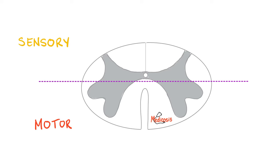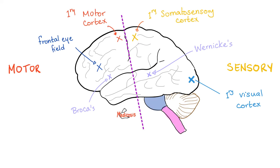Medicine makes so much sense once you understand what you're talking about. Consider: if you want to move your arm — motor — you start anterior to the line, anterior to the central sulcus. If you want to feel heat or cold — sensory — it's behind the line. Moving your eyes is motor, in front. Vision is a sensation — behind. Broca's area: talking is a motor function, in front. Wernicke's area: understanding is a sensation, behind the line. Motor is anterior; sensory is posterior.